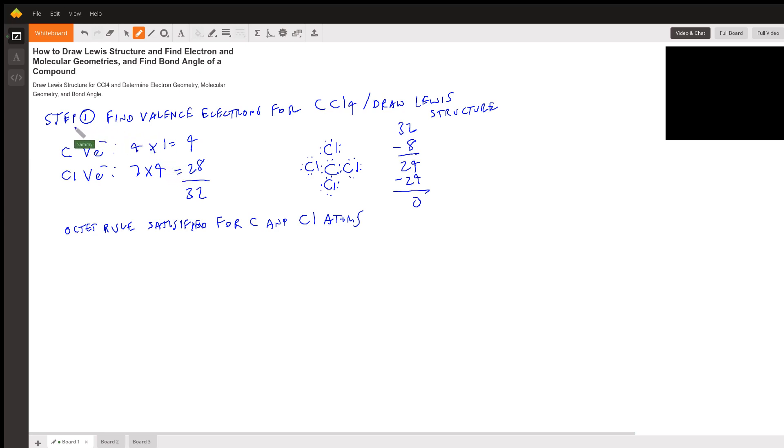So the first step is we need to find the number of valence electrons for the compound CCl4. Then afterwards we'll need to draw the Lewis structure. So we'll go ahead and write down carbon and chlorine, and we'll find the valence electrons for each.